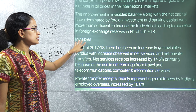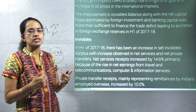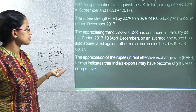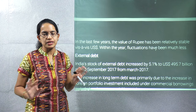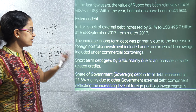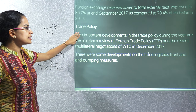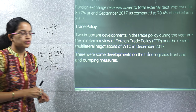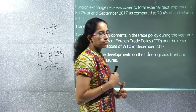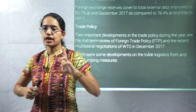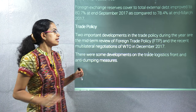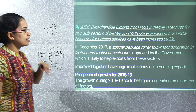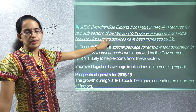Invisibles basically refers to the service sector or net private transfers, which have seen considerable increase over the years. In the last few years the rupee has been relatively stable against the dollar. On trade policy, two important developments are the midterm review of the Foreign Trade Policy and the multilateral negotiations of WTO in December 2017. There are various incentives for exports from India divided mainly into the textile sector and service exports.